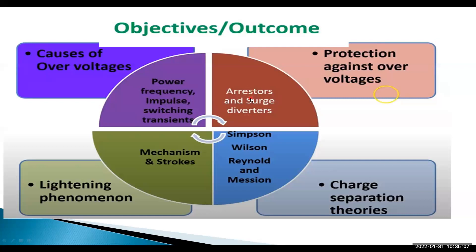Protection against charge separation theories was already explained in the previous lecture. Different types of theories are there: Reynolds theory, Simpson's theory, Wilson theory, and machine theory. According to these theories, I explained how charge is separated in the clouds and how charges are formed in the clouds.